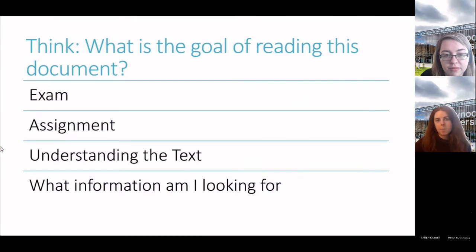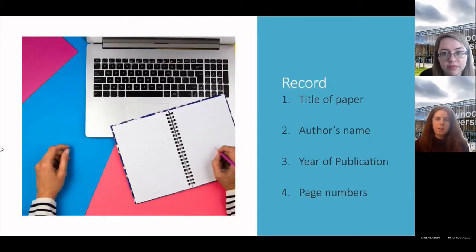It's important then to think what is the goal of the reading or what is the goal of reading this document? Let's say if you have an article to read for an essay or for a lecture, are you reading it for an exam? Are you reading it for an assignment? Are you reading it just to understand the text and comprehend it? Just always bear that in mind because that would really frame how you read it. For example, if it's understanding the text, then you can maybe look at the introduction and glance over results and things like that. But if it's for an assignment, you might need to go into more detail. It always varies. It's also very important to remember to record the title of the paper, the author's name, the year of publication and the page numbers that you are focusing in on. This will really stand to you when you are referencing the paper.